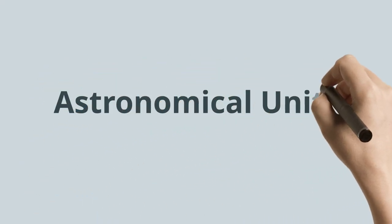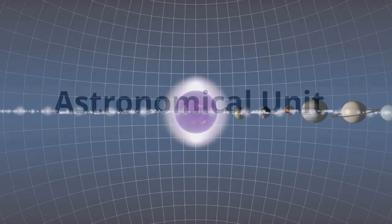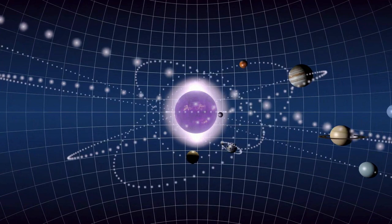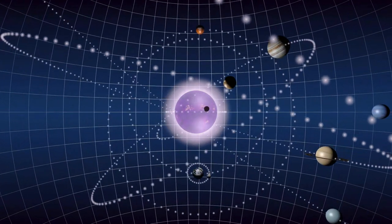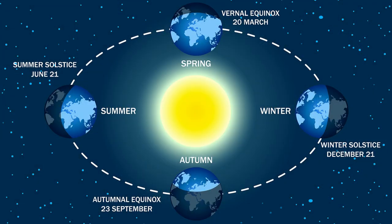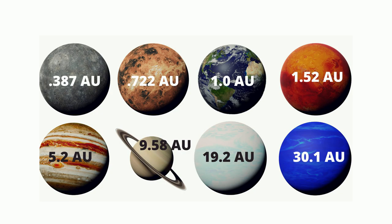Another way that you can measure distance in space is by using an astronomical unit. It is most frequently used to measure distance from the sun to a planet. It is the average distance from the sun to the earth, and it is approximately 150 million kilometers. Here is a chart of all the planets and their distance in AU from the sun.